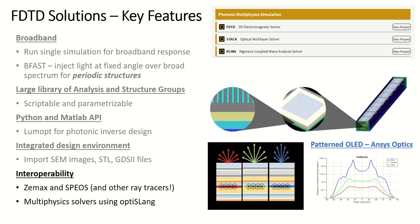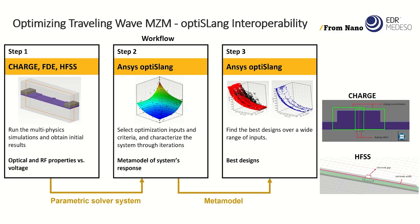One can also optimize their design taking results from multiple physics solvers by creating a metamodel using OptiSlang, which uses the latest AI techniques to optimize your design. In this example workflow for a Mach-Zehnder modulator, we use OptiSlang to minimize the velocity mismatch and loss, which are merit functions. They are a function of the selected inputs — applied doping, which is calculated with the charge solver as part of Lumerical multiphysics — and the electrode geometry, which is calculated using HFSS.